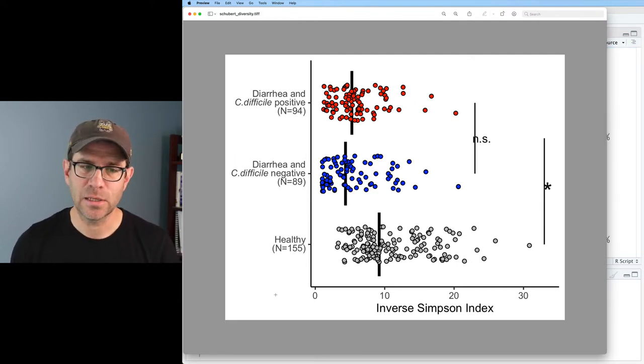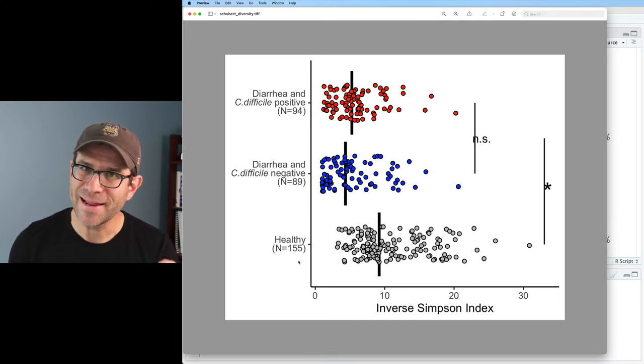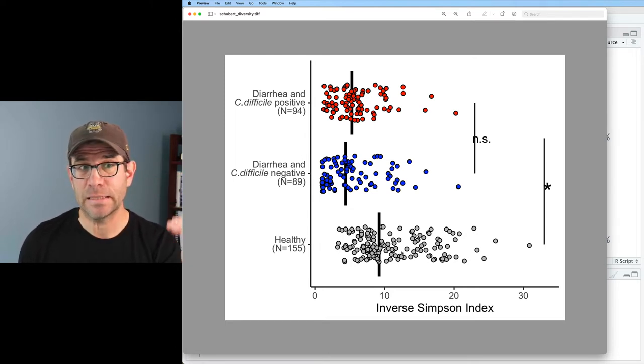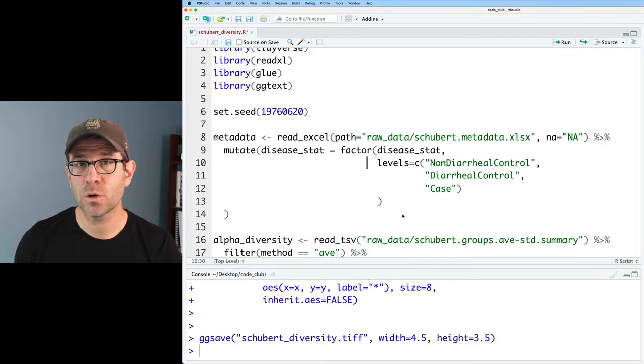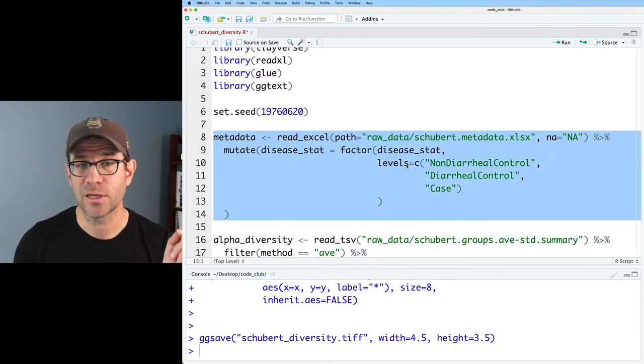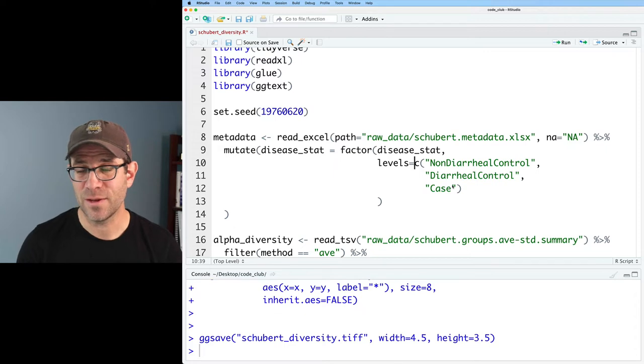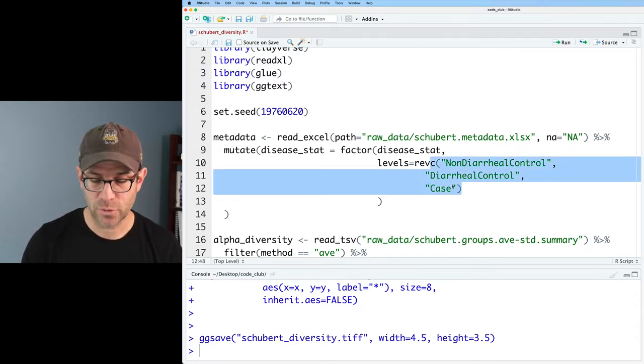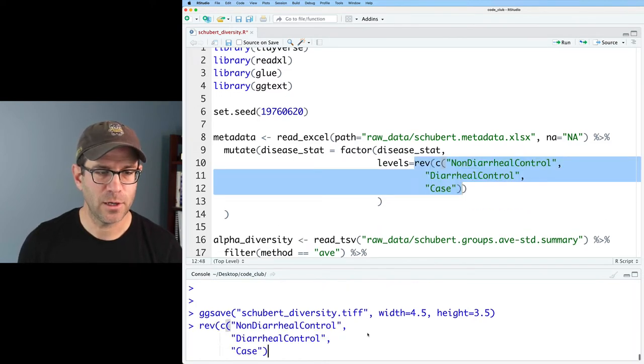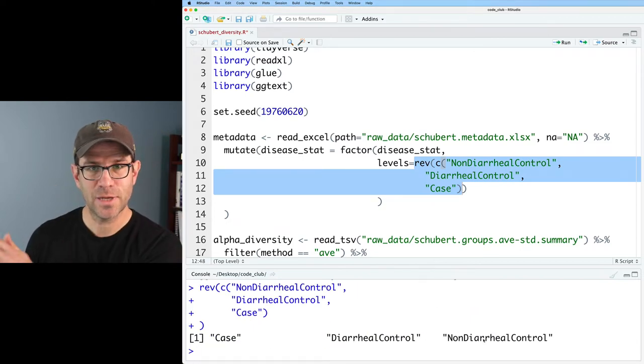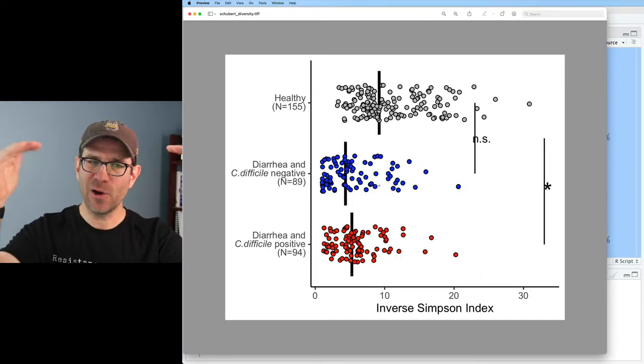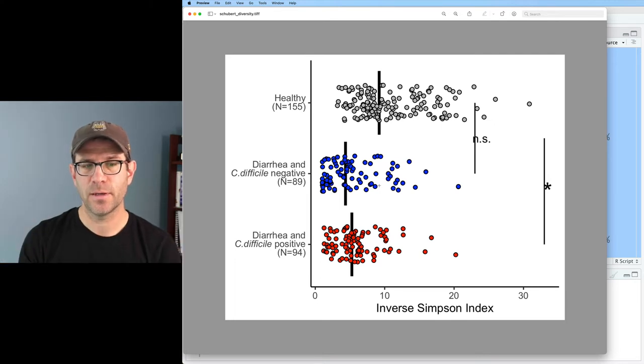So the next thing that I want to take on is the order of my three groups. I think I like this, and so I'm going to stick with it. So I think I want healthy up top, followed by diarrhea and C. diff negative, and finally diarrhea and C. diff positive. I set the order for that up here where I was reading in metadata and define disease_stat as a factor, and I set these levels. So I could copy and paste and change the order of these things, or I can use the rev function, which is short for reverse. So to show you how that works, if I run rev down here at my prompt, then I get case diarrheal control, non-diarrheal control. It reverses the order of everything. So I'll go ahead and run everything again, and those three groups should be flipped. Sure enough, I now have healthy diarrhea and C. diff negative, diarrhea and C. diff positive.